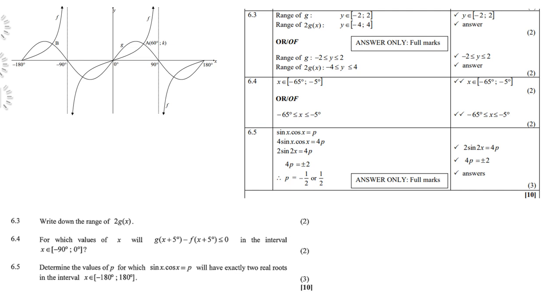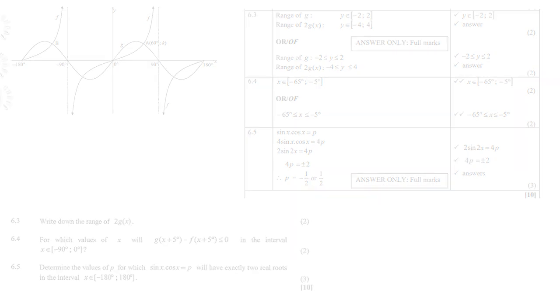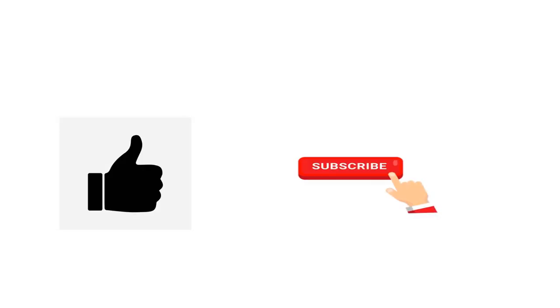And then of course, 2sin x cos x is your double angle identity, which you can replace by sin(2x). So it is 2sin2x, because remember it is 4, 4 comes from 2 times 2, equals 4p. Then of course, therefore, 4p is plus or minus 2 if you divide by 2. And therefore, p will be either minus half or plus half. This is Mathematics with Ames, Ahmed Suleiman. Please give me a huge like and don't forget to subscribe. Remember, subscription is free.